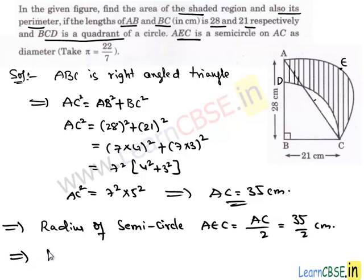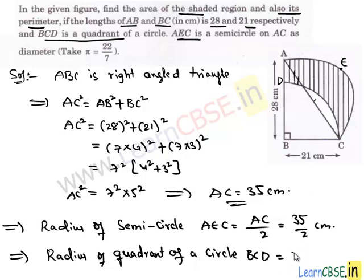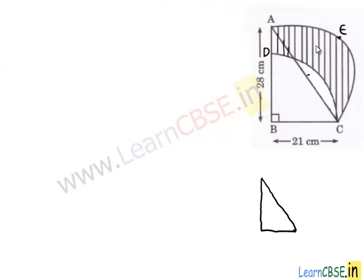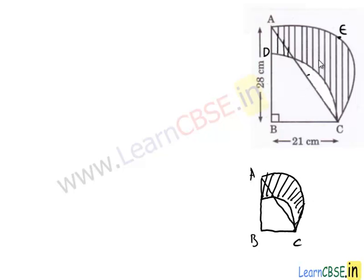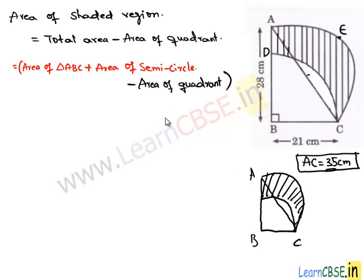The radius of the quadrant of the circle equals side BC, which is 21 cm. To find the area of the shaded region, we take the total area (triangle ABC + semicircle AEC) and subtract the area of the quadrant. This gives us the shaded portion.